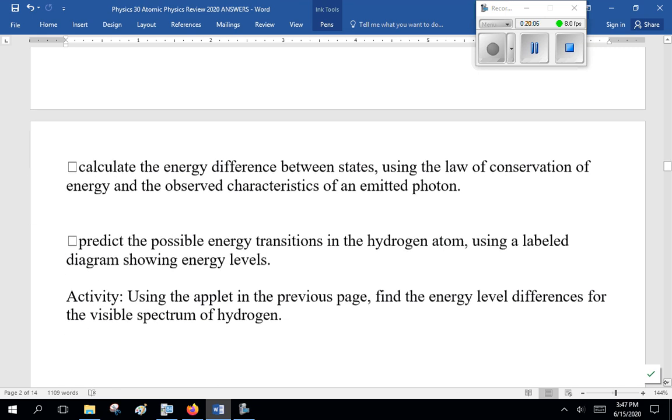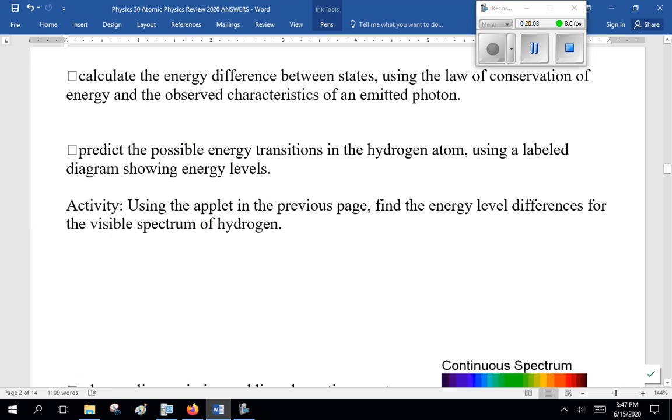Calculate the energy difference between states using the law of conservation of energy and the observed characteristics of an emitted photon. Predict the... Well, that's E equals HF. I'm repeating myself. So, we can figure out the energy of the photon. Or we can turn that into frequency or wavelength if you wanted to.